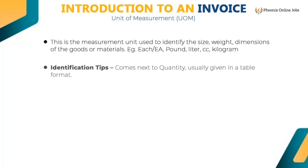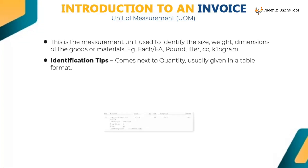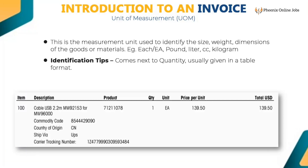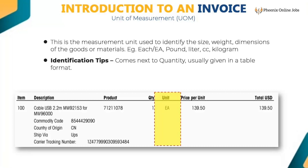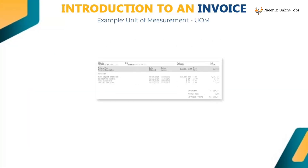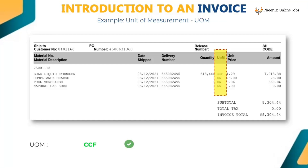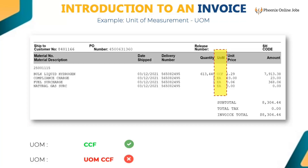Unit of measurement (UOM) is the measurement unit used to identify the size, weight, or dimensions of goods or materials — for example, each, pound, liter, cc, or kilogram. It comes next to quantity in table format. Key 'ccf' for the first line UOM, and key other UOMs as per the image shown in the snippet. Do not key the word 'UOM,' 'unit,' or 'unit of measurement.' If these words are already populated, then remove them.